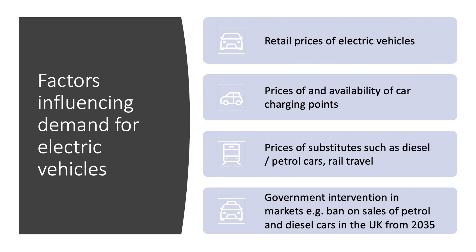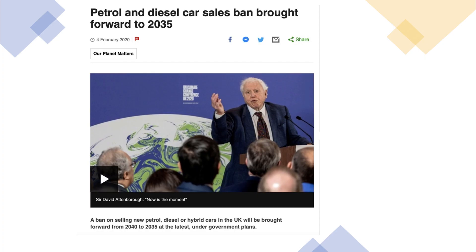A major factor influencing the market going forward is government intervention — for example, the UK government's decision to ban sales of new petrol and diesel vehicles from 2035. When we make a Ceteris Paribus assumption, we are simplifying the theoretical relationship, trying to isolate in this case the price-demand relationship, while keeping in mind there are many other factors that influence demand.